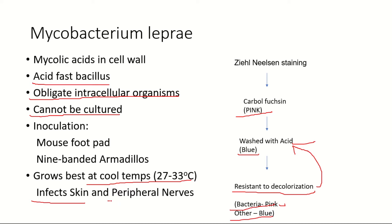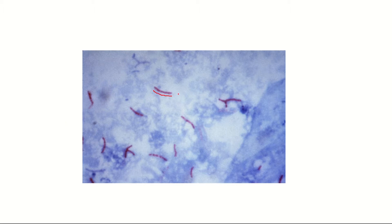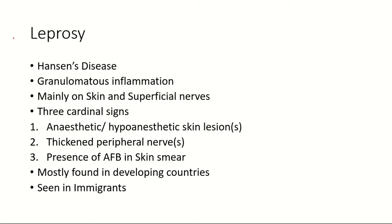This preference for cool temperatures is one reason why these bacteria mainly infect the skin and peripheral nerves — these are organs that are far from the body's core heat. The Ziehl-Neelsen staining technique is also used for staining other mycobacteria such as Mycobacterium tuberculosis and also for Nocardia.